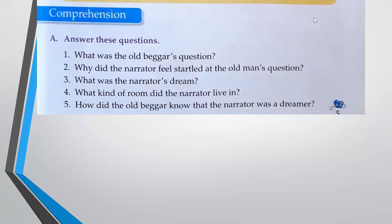So here are the questions at the end of the lesson. What was the old beggar's question? Why did the narrator feel startled at the old man's question? What was the narrator's dream? What kind of room did the narrator live in? How did the old beggar know that the narrator was a dreamer? Let's go to the first one.